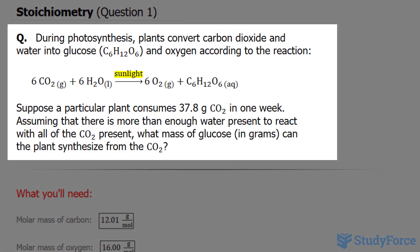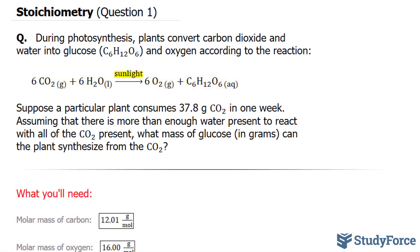The question reads, during photosynthesis, plants convert carbon dioxide and water into glucose and oxygen according to the reaction shown below. Suppose a particular plant consumes 37.8 grams of carbon dioxide in one week. Assume that there is more than enough water present to react with all the carbon dioxide present. What mass of glucose in grams can the plant synthesize from the CO2?